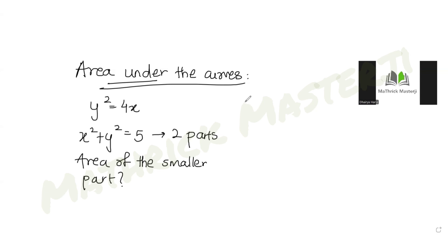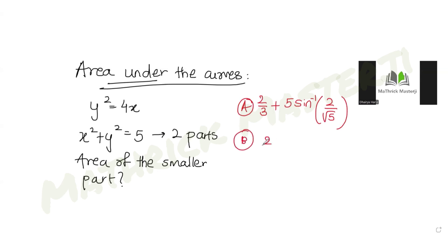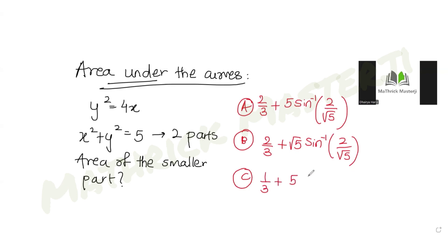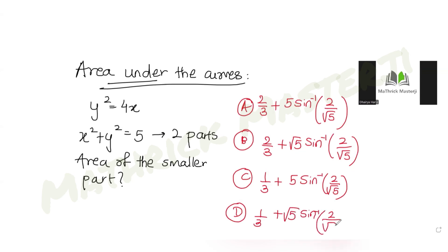The answer choices given are: option A: 2/3 + 5·sin⁻¹(2/√5); option B: 2/3 + √5·sin⁻¹(2/√5); option C: 1/3 + 5·sin⁻¹(2/√5); and option D: 1/3 + √5·sin⁻¹(2/√5). Let's see how to solve this question.